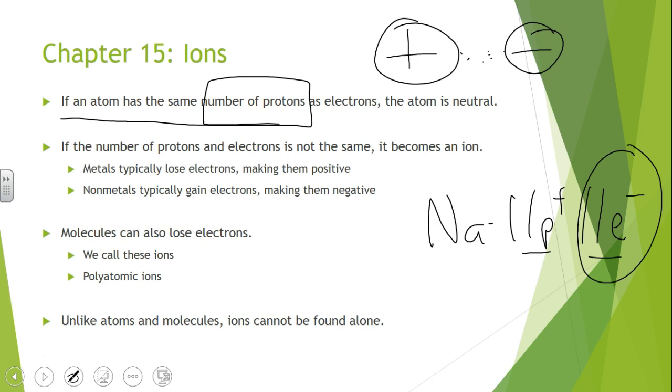And then the opposite is true for non-metals. Non-metals typically gain electrons, the things on the right-hand side of the periodic table above the stair step, and that makes them negative.